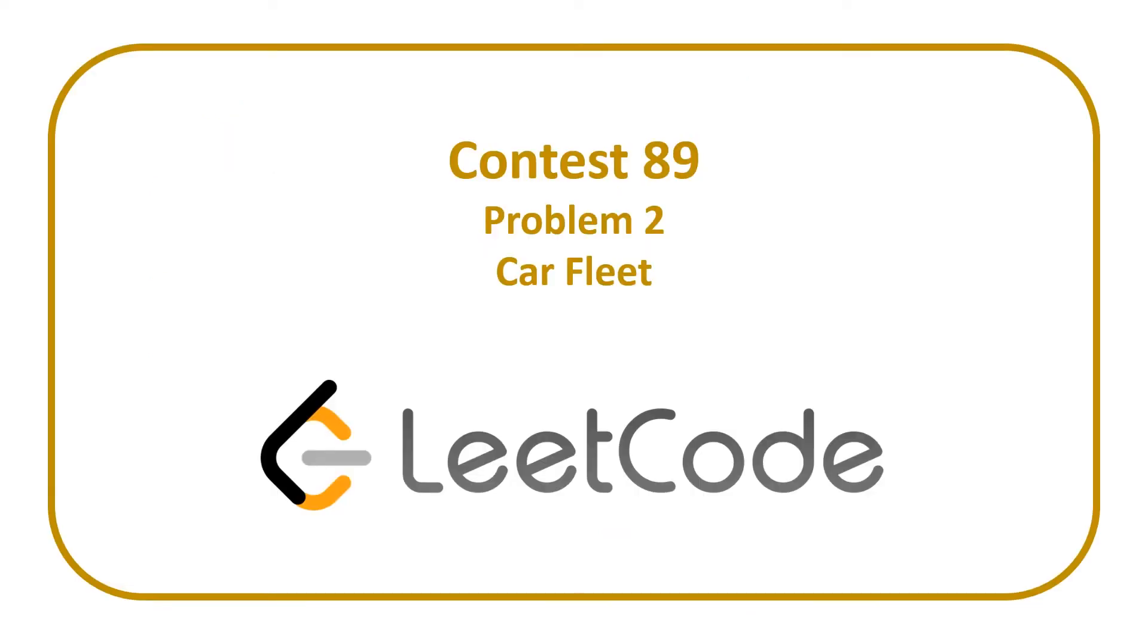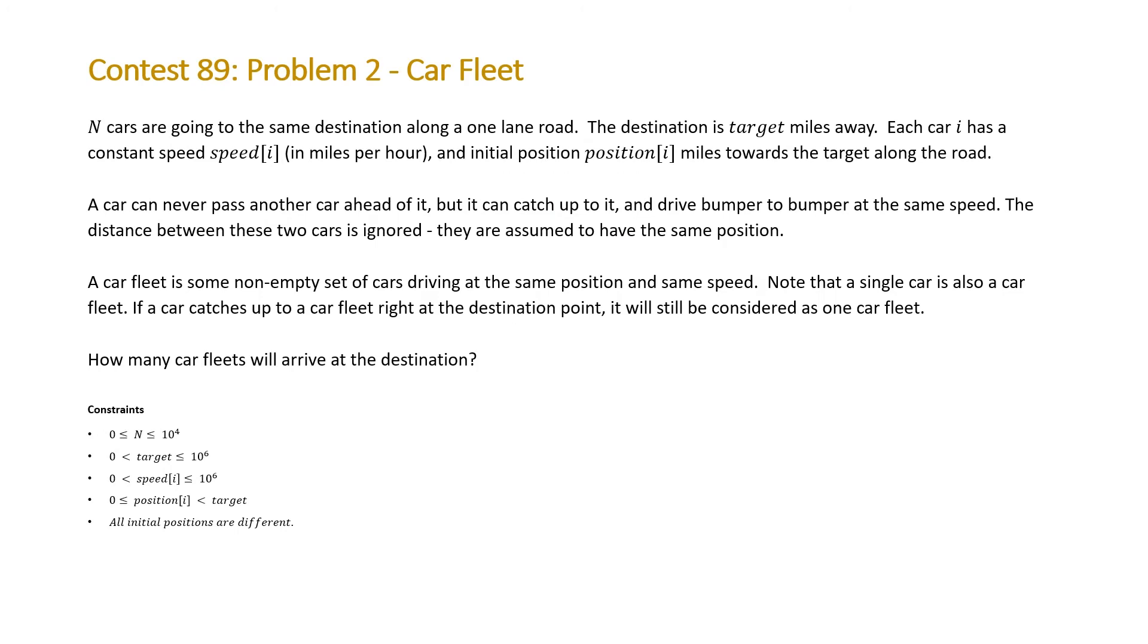In today's video, we're going to be covering Problem 2 from Leak Code Contest 89 entitled Car Fleet. The problem states N cars are going to the same destination along a one-lane road. The destination is target miles away. Each car i has a constant speed speed[i] in miles per hour, and initial position position[i], miles toward the target along the road. A car can never pass another car ahead of it, but it can catch up to it, and drive bumper to bumper at the same speed.